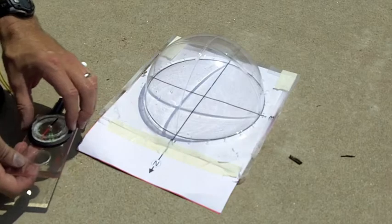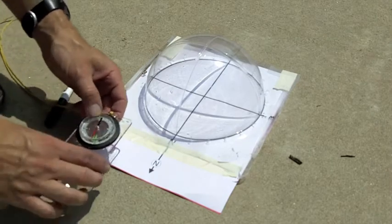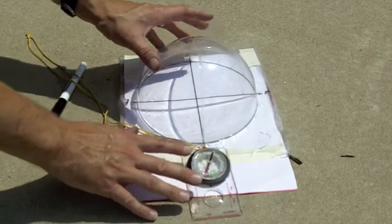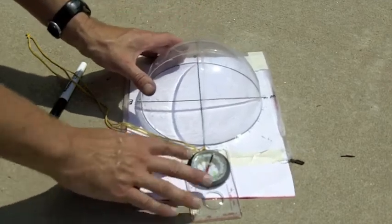So this is how you make a mark on your sun tracking hemisphere. The first thing you do is put your compass right there at the top and then rotate it